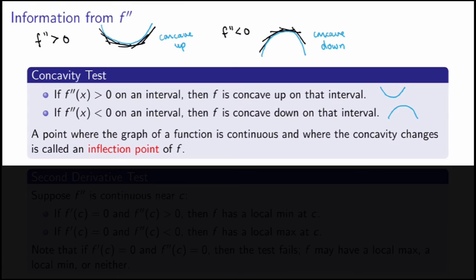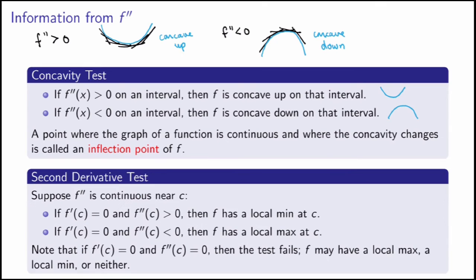Just as local max and min are defined as points where the sign of f prime changes, we also have something special about the points where the sign of f double prime changes. These are called inflection points — they are the points where concavity changes from concave up to concave down or vice versa.